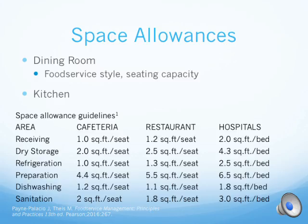Once you've figured out the dining room size, you can figure out the kitchen size. There is a guideline for different kitchen areas further broken down into hospitals, restaurants, and cafeterias. They list specific space allowances for different areas of the kitchen such as receiving, dry storage, etc., per seat. For example, there is 2 square feet per seat in dry storage for cafeterias, 2.5 square feet per seat for dry storage in restaurants, and 4.3 square feet per bed in hospitals — hospitals use beds because most of the clientele are patients in beds.